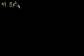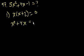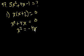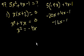Next problem, 97. What is the value of 5x² + 4x − 1? Statement 1: x(x + 2) = 0. Let's multiply it out: x² + 4x = 0, so x² = −4x. Substituting: 5(−4x) + 4x − 1 = −20x + 4x − 1 = −16x − 1. That doesn't get us anywhere, so statement 1 alone does not help us solve this problem.